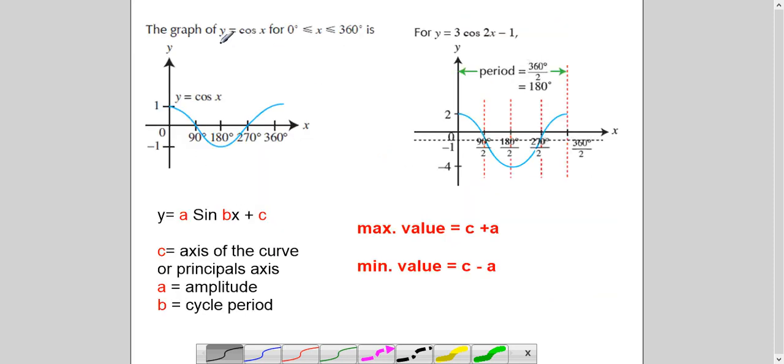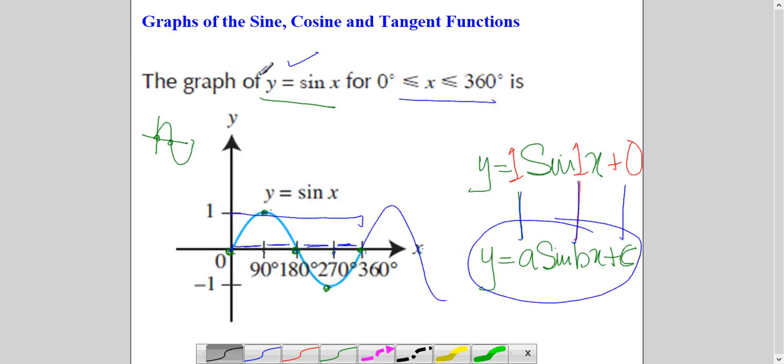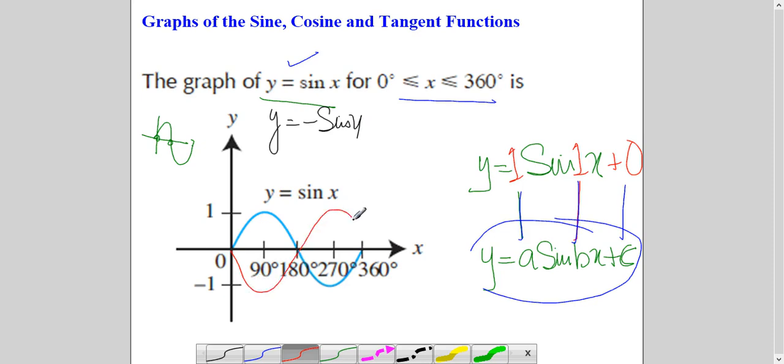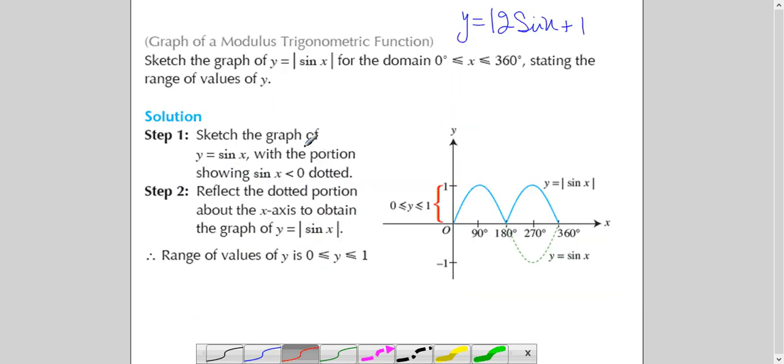By the way, if you have here minus, y equals minus sine x, what comes in your mind? What will happen to this graph? It will be reflected in the x-axis. The whole graph. Because whatever the value is plus will become minus. So if you have y equals minus sine x, then this curve will be like this. The curve gets upside down. Remember it. Either it is cosine graph, sine graph, tan graph. They all are reflected in the x-axis.